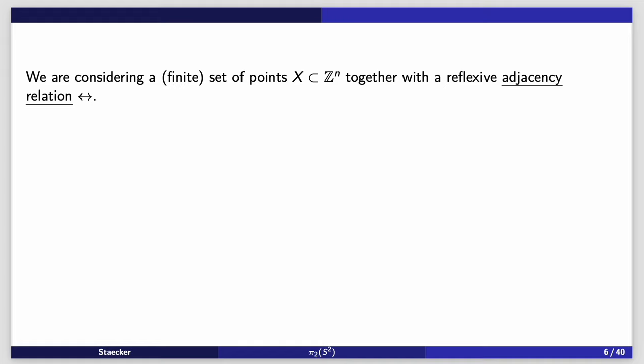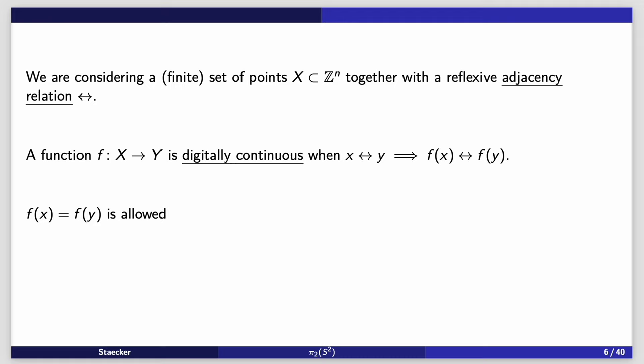We're considering a finite set of points in the integer lattice, Z to the N, in any dimension, together with some kind of adjacency relation, which I'm going to use that little symbol for. Rosenfeld made a definition: a function from one of these things to another is called digitally continuous when adjacent points in the domain map to adjacent points in the codomain. And since this is a reflexive adjacency relation, f(x) = f(y) is allowed in the target space.